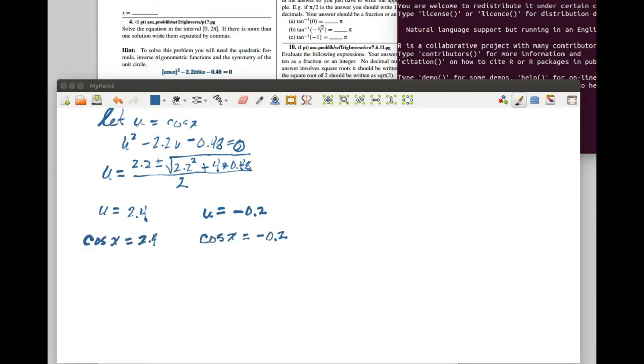Now remember that u is really the cosine of x, so u equals 2.4 really means that the cosine of x equals 2.4. U equals negative 0.2 means that the cosine of x equals negative 0.2. So now what we need to do is find out what x is in each of these cases.